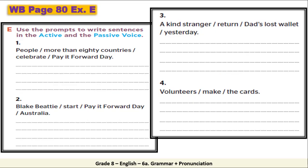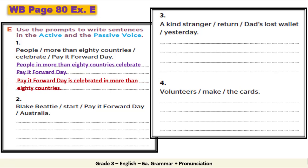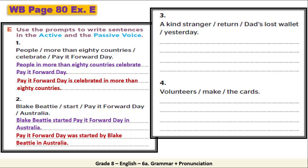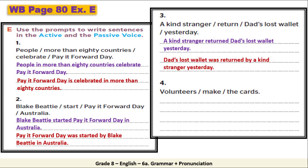Now let's move to exercise E, Workbook page 80. Use the prompts to write sentences in the active and the passive voice. Remember, you have to write two sentences — one in the active voice, then change it into the passive. Let's check your answers. Number 1 active: 'People in more than 80 countries celebrate Pay It Forward Day.' Passive: 'Pay It Forward Day is celebrated in more than 80 countries.' Number 2 active: 'Blake Mycoskie started Pay It Forward Day in Australia.' Passive: 'Pay It Forward Day was started by Blake Mycoskie in Australia.' Number 3 active: 'A kind stranger returned dad's lost wallet yesterday.' Passive: 'Dad's lost wallet was returned by a kind stranger yesterday.' Number 4 active: 'Volunteers make the cards.' Passive: 'The cards are made by volunteers.'